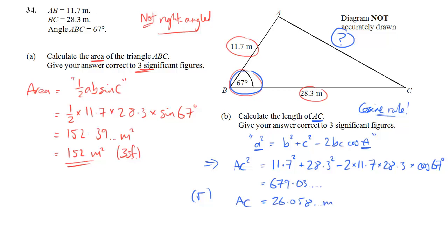And of course we want to round that. We want to round it to 3 sig figs. The third sig fig is the 0, but the 5 after it tells me to round the 0 up to 1. So 26.1 meters is what AC is to 3 significant figures.